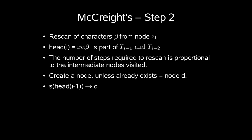Here we have to create a node, unless there already is a node at this position. Let us denote this node by d. The suffix link of the node labeled head(i-1) will point to this node.